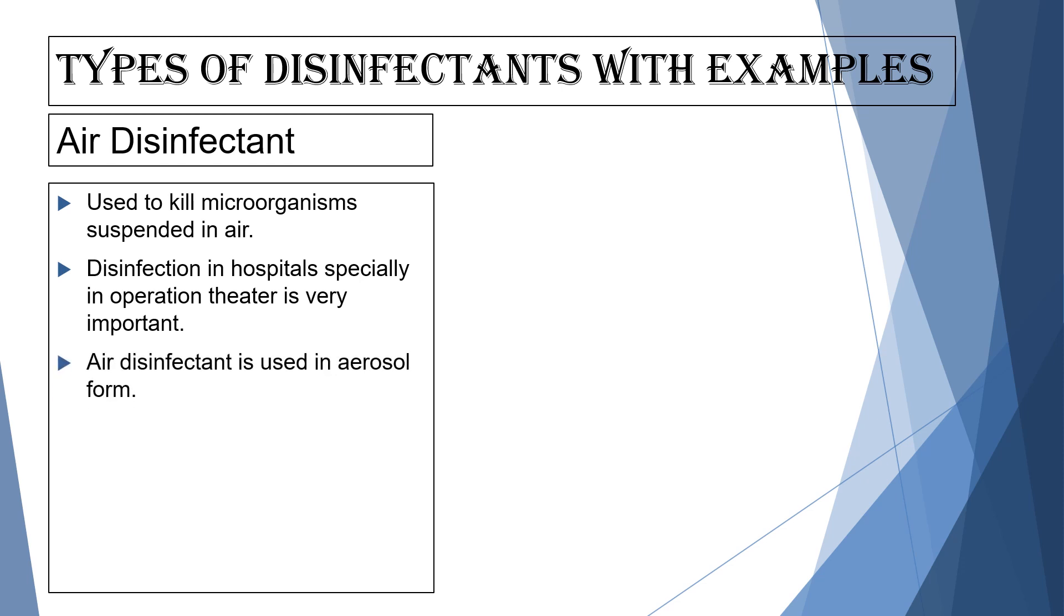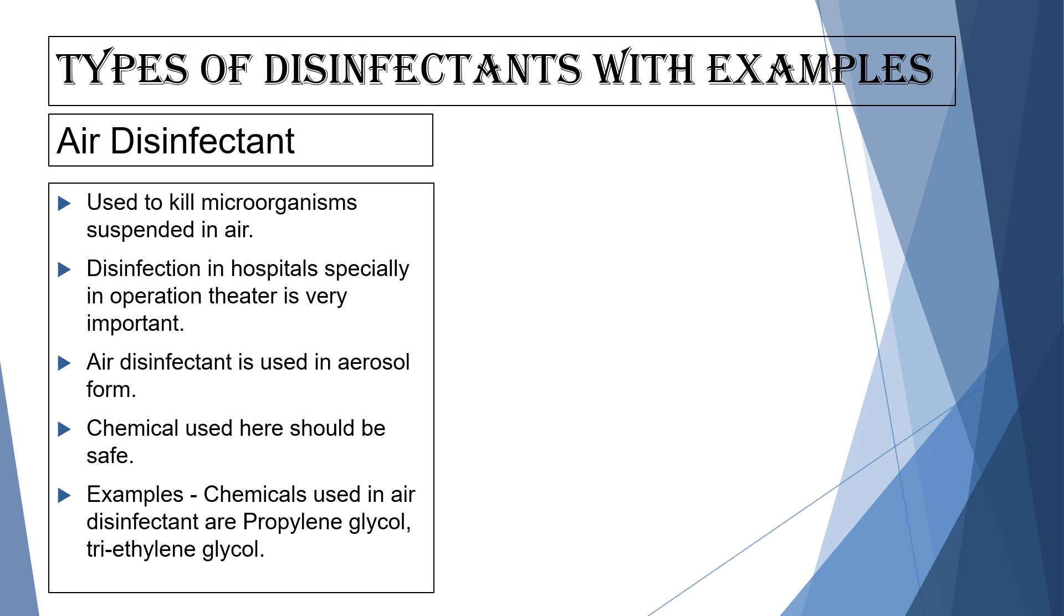Air disinfectant is used in aerosol form. Chemicals used here should be safe. Definitely, these chemicals used should be safe because they are going to be inhaled by human beings. So it is very important that they should be safe. The examples are propylene glycol and triethylene glycol.